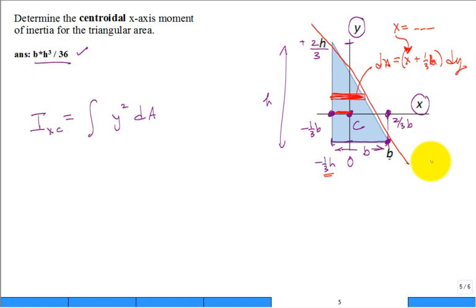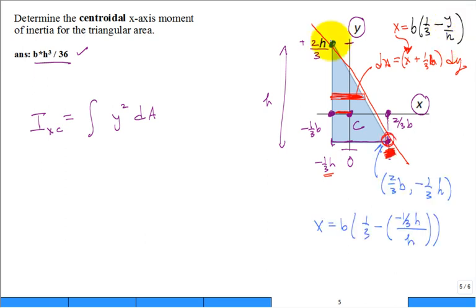All right, well I did work it out, and I'm sure you could work it out too. It takes a while, and you can get that this location x is equal to b times one-third minus y over h. Okay, so once we have that, then we can plug into the equation y squared and then we'll have b times one-third minus y over h plus one-third b.